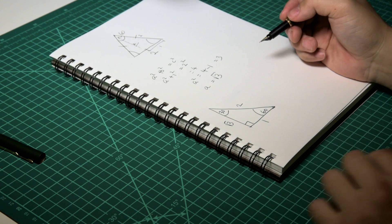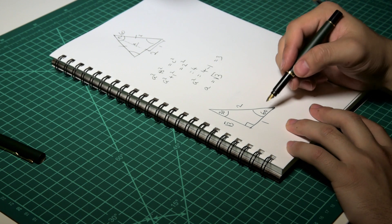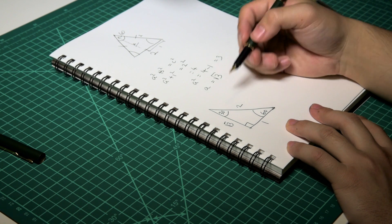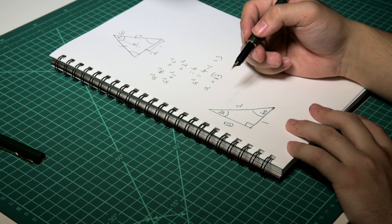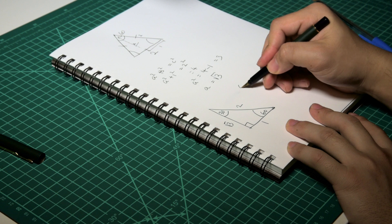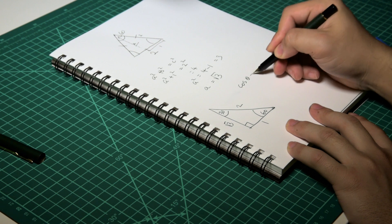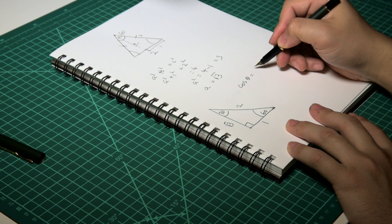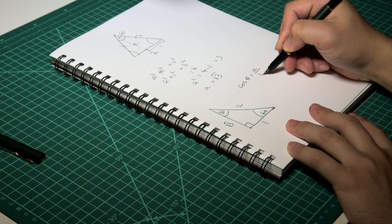So from here we can work out exactly what cos 60, sine 60 and cos 30, sine 30 are going to be. So let's do that. Cos of theta is equal to adjacent over hypotenuse.